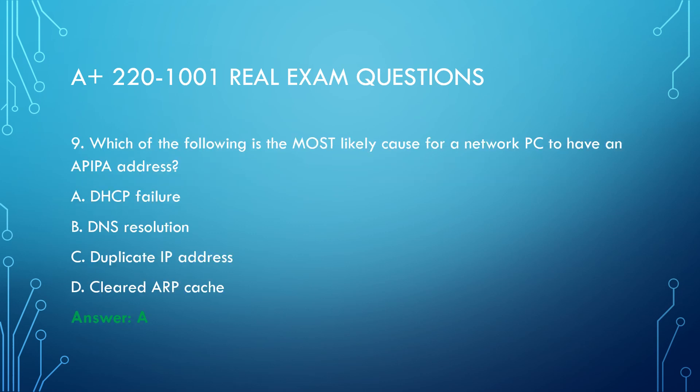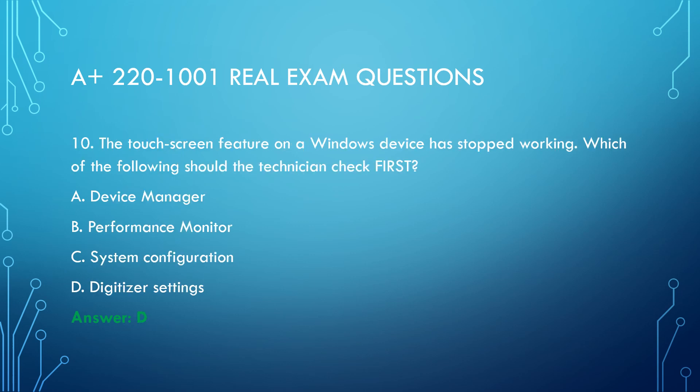Question 9. Which of the following technologies is used by malicious employees to obtain user passwords? A. Man-in-the-middle. B. Phishing. C. Tailgating. D. Shoulder surfing. Answer: D.